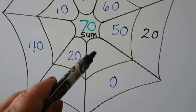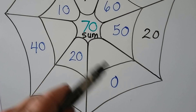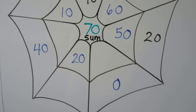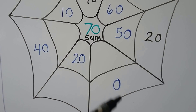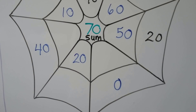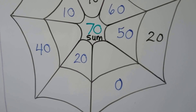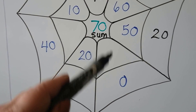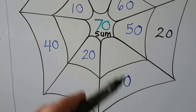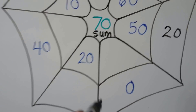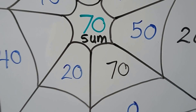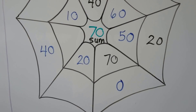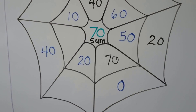What number can we add with zero to have a sum of seventy? Remember, when you add zero the number stays the same. To get a sum of seventy, if we're adding zero, we must need to add seventy. Seventy plus zero is seventy. Seven tens plus zero tens is seven tens.